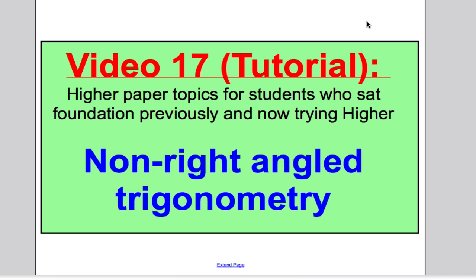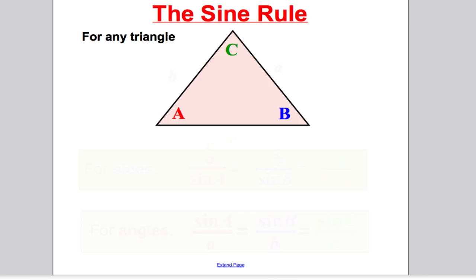Let's start straight away with the sine rule. The sine rule works for any triangle. So if you see a triangle without a 90 degree angle, you can think to yourself: is the sine rule working here, or the cosine rule? Remember, for Pythagoras and normal trigonometry SOHCAHTOA you needed 90 degrees. For the sine rule, it works for any triangle — it doesn't even have to have a 90 degree angle.